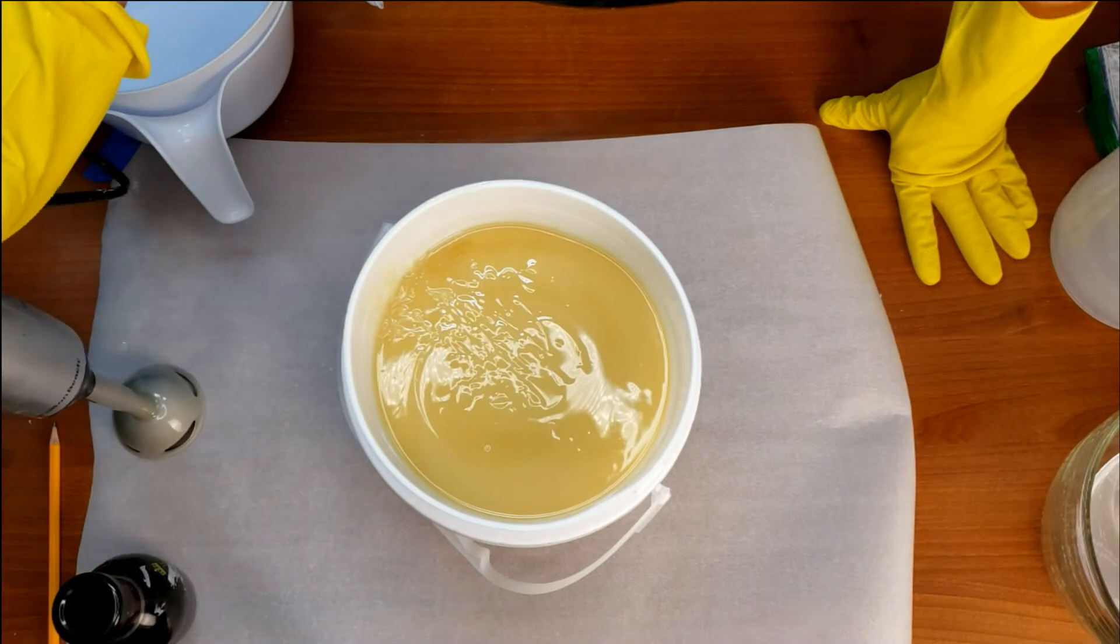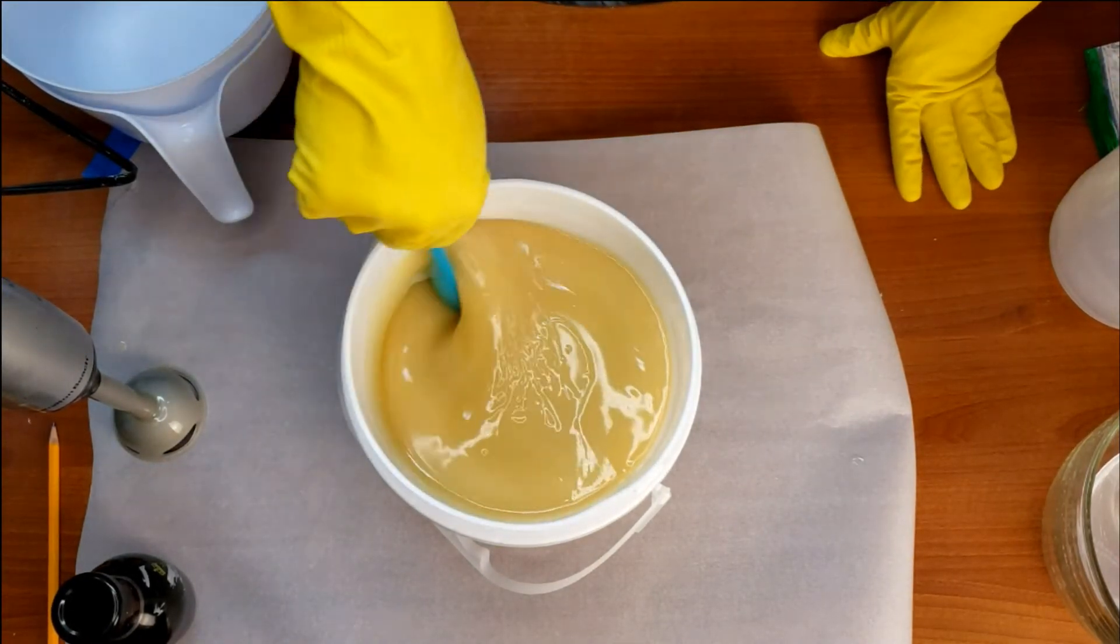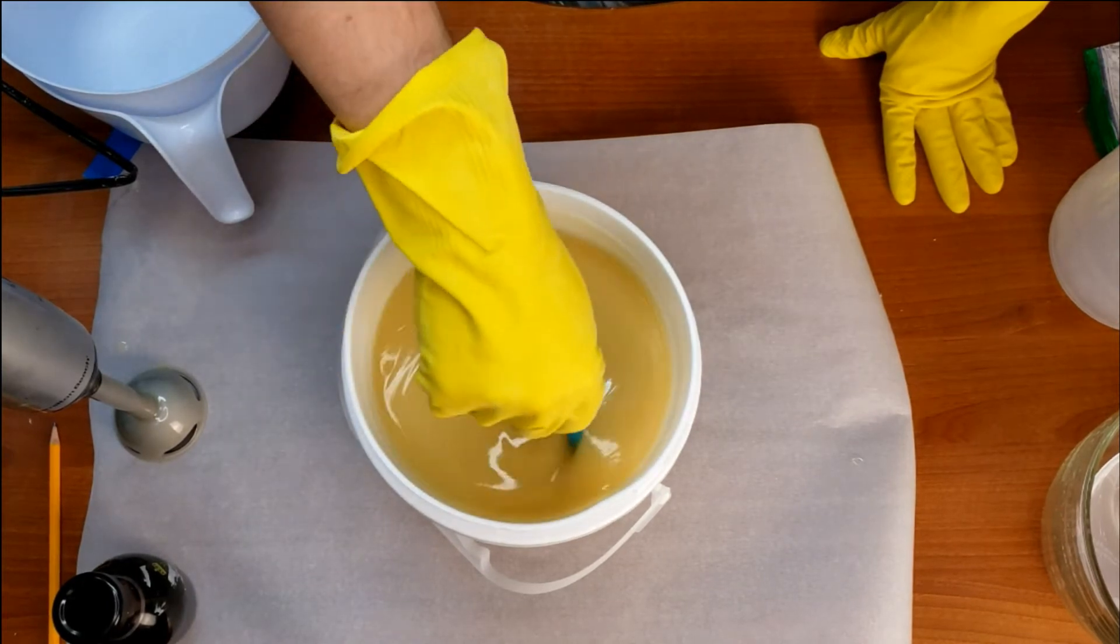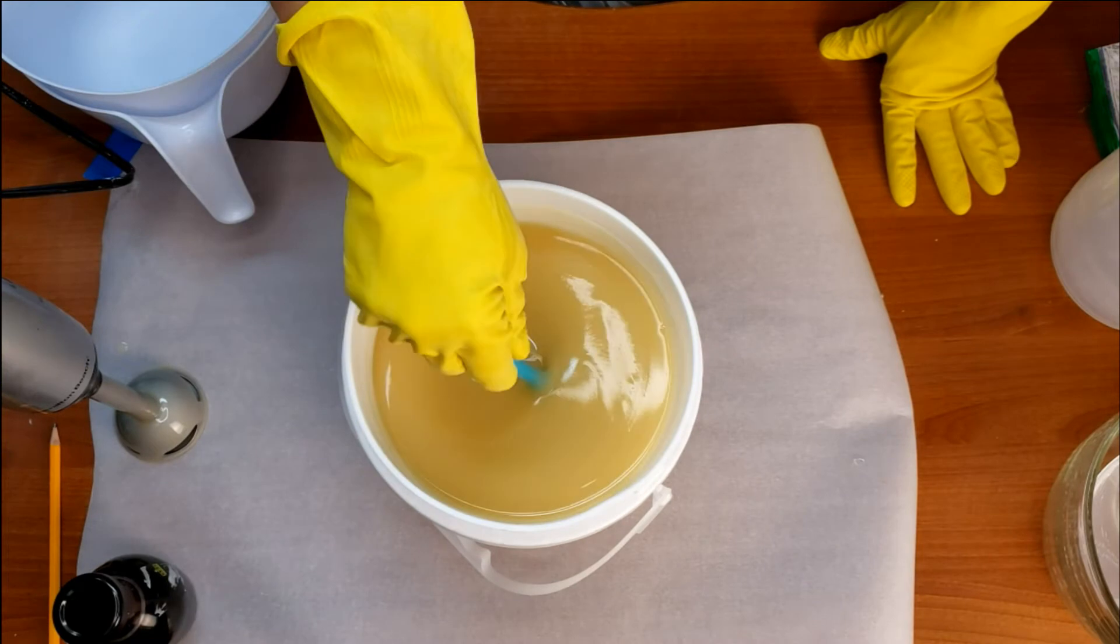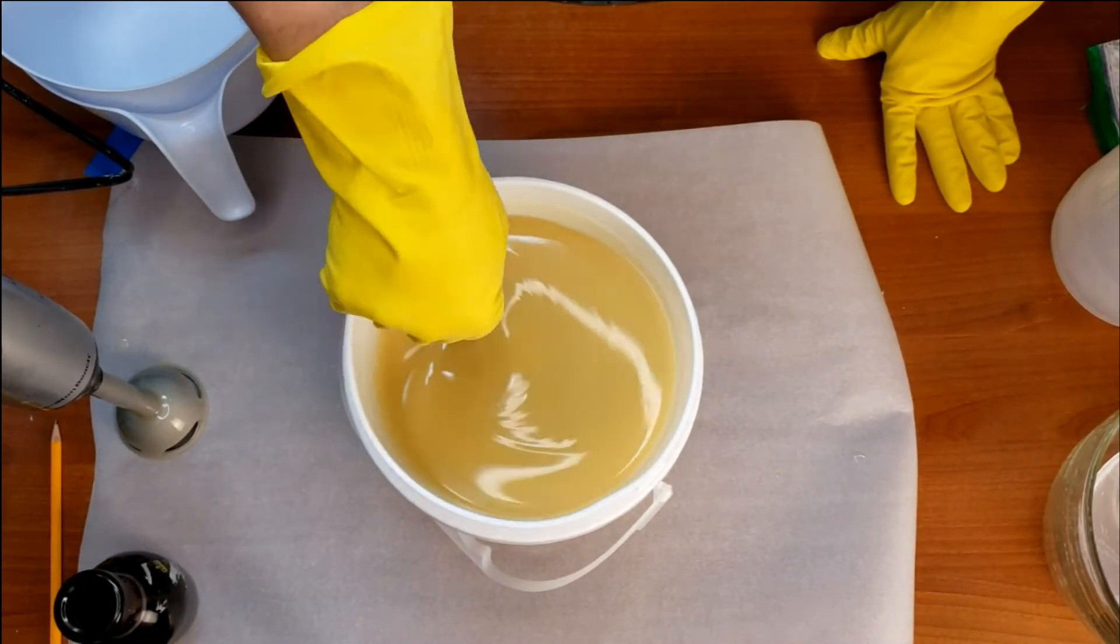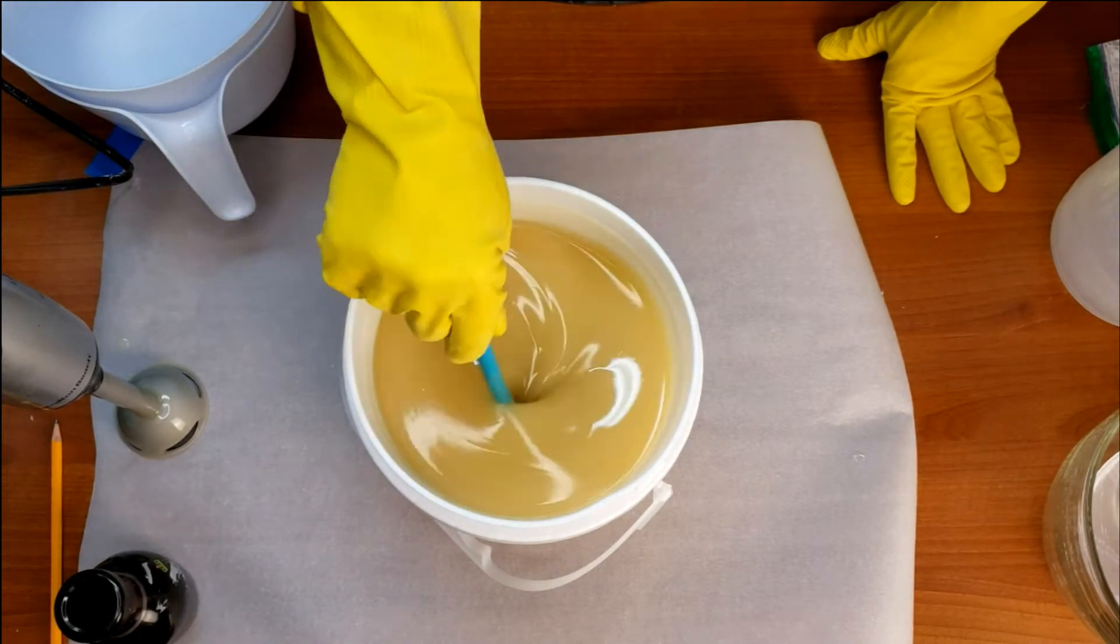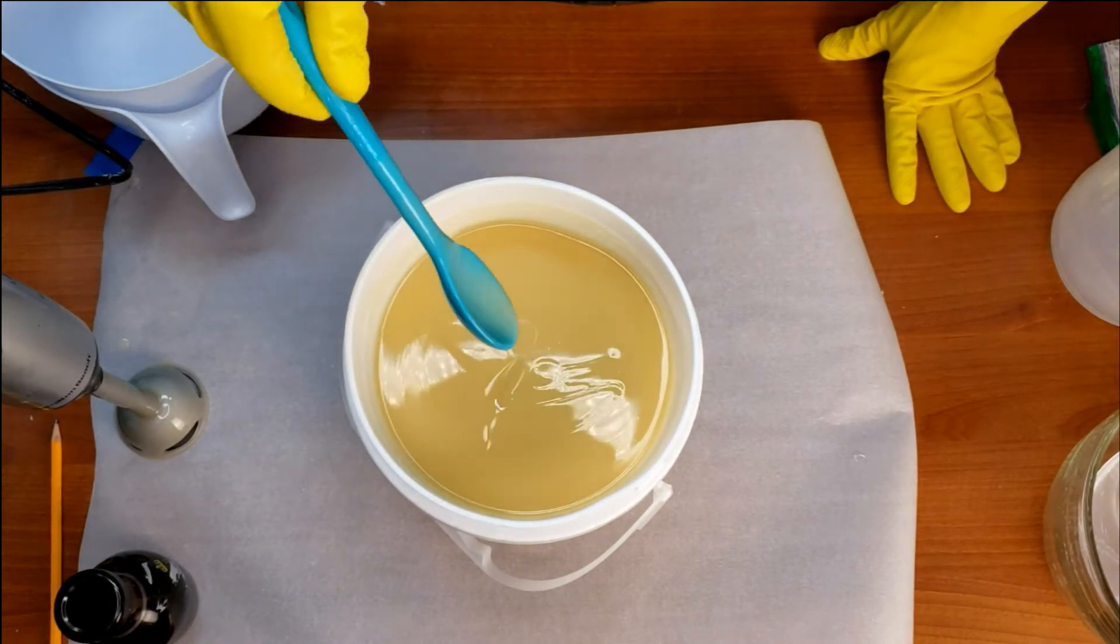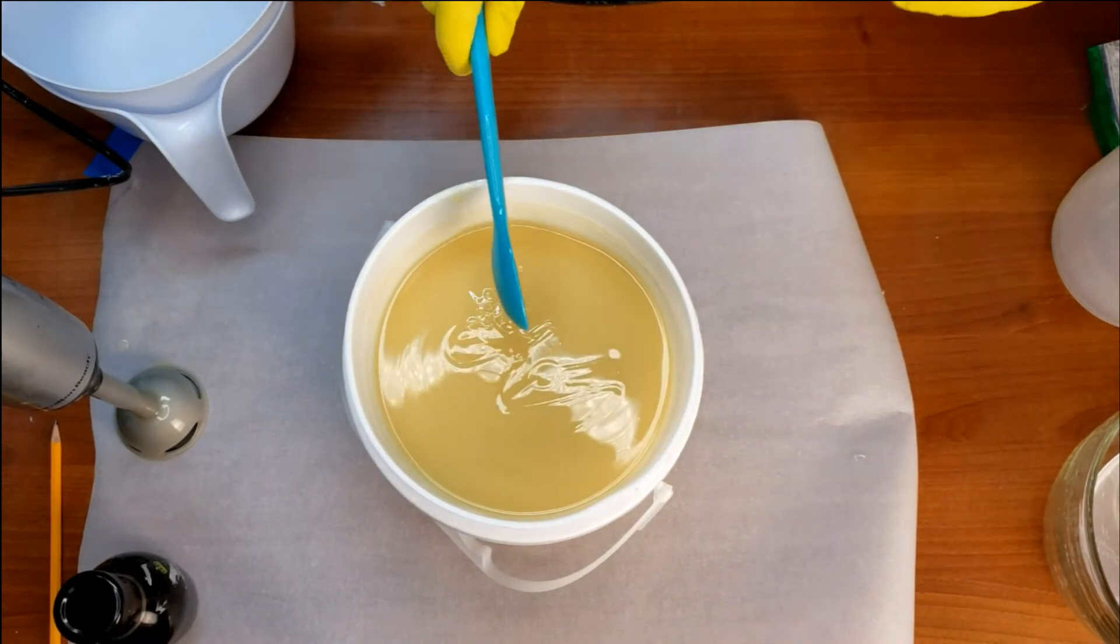You get to what a lot of people refer to as a trace. Some folks have a hard time knowing what they're looking at - is this the trace that I want? This ends up being blended to between a light and a medium trace. The batter is still pretty watery but you'll see when I drizzle it off the spoon how those little ribbons stay on the surface - that's good trace.